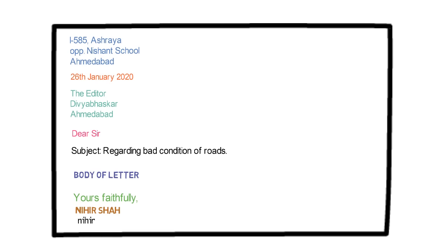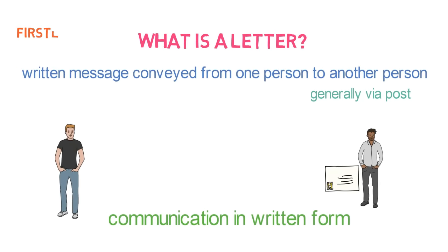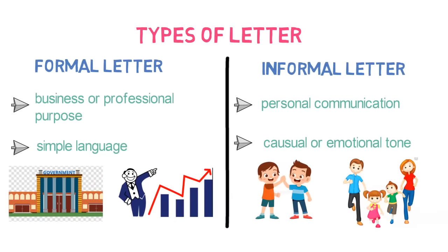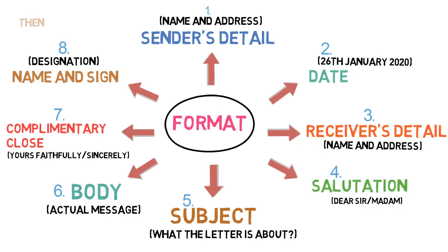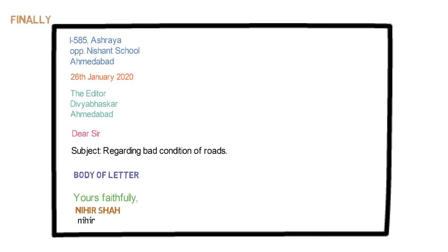Please pause the video and go through the letter again. That's all about letter writing in this video. Let's quickly revise what we learnt. A letter is a written message conveyed from one person to another, generally via post. There are two types of letters: formal and informal. A formal letter has 8 essential components: 1. Sender's details. 2. Date on which the letter is written. 3. Receiver's details. 4. Salutation. 5. Subject. 6. Body. 7. Complimentary close. 8. Sender's name, signature, and designation if any. Finally, we looked into a sample letter to the editor.